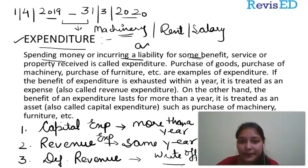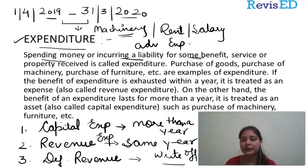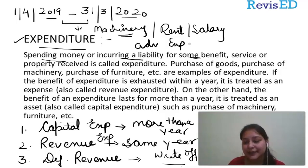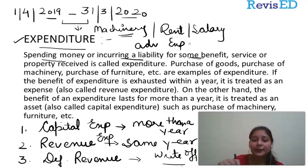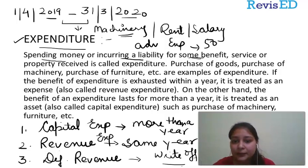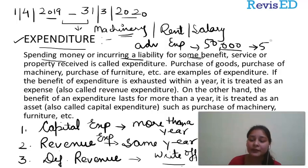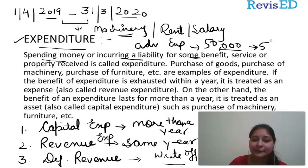Like advertisement expense — deferred revenue expenditure is like advertisement expense. If I am spending something on advertising, that does not mean it is going to provide me benefit for that particular year only. It will provide me benefit maybe for the next four or five years. So I would estimate the amount — let's say I have spent 50,000 on advertisement, estimating equal benefit for five years, so I would write 10,000 each year as deferred revenue expenditure.